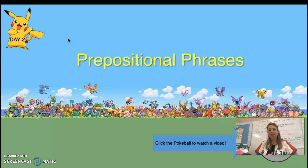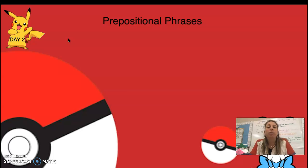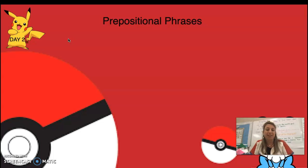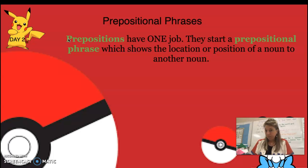Yesterday we started talking about prepositions and how a preposition tells me the position of the noun. Today we're going to look at what we call a prepositional phrase — a group of words that is not its own sentence but a phrase within the sentence. Prepositions have one job: they start a prepositional phrase, which shows the location or position of a noun in relation to another noun.